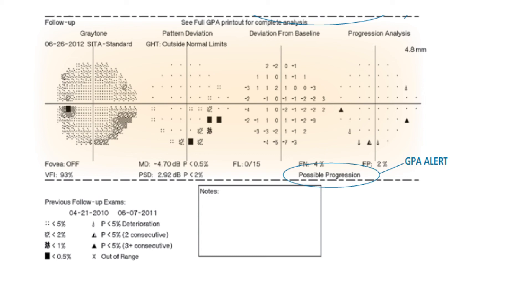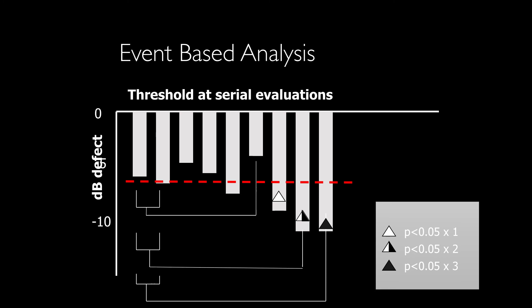We also have GPA alert, which could be possible progression or likely progression. If we have a change in one visual field compared to baseline, it will be displayed as a white triangle. If that change happens in two visual field tests, it will be displayed as a half-black triangle.